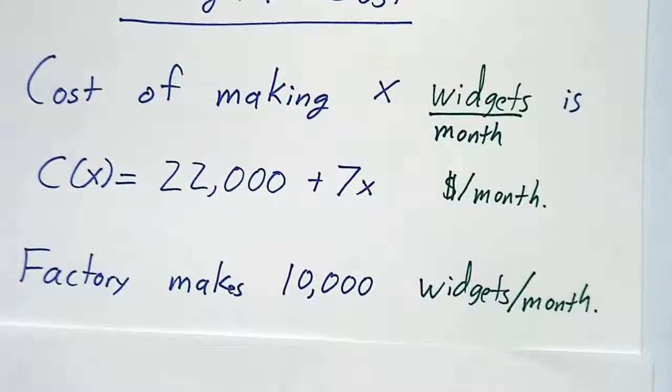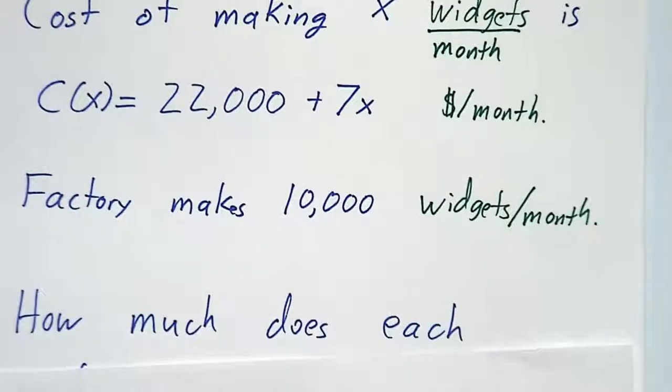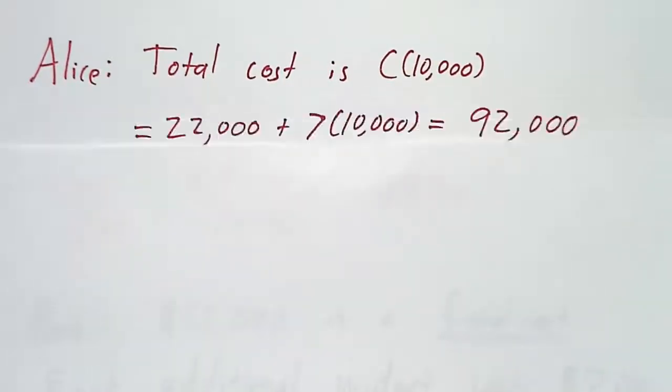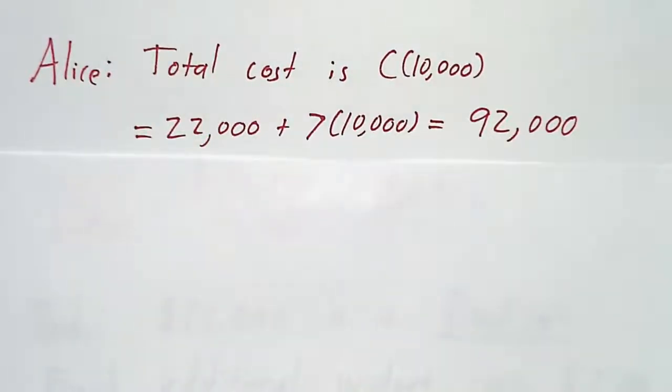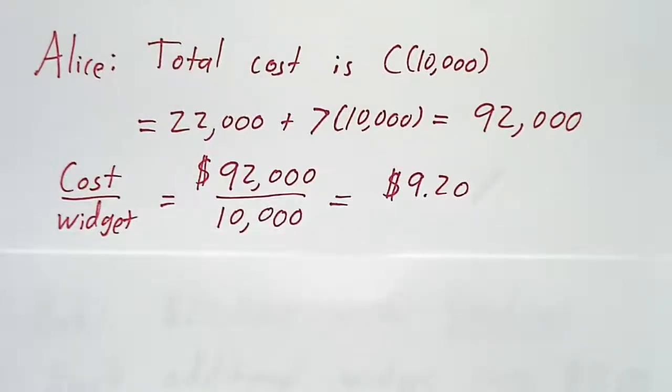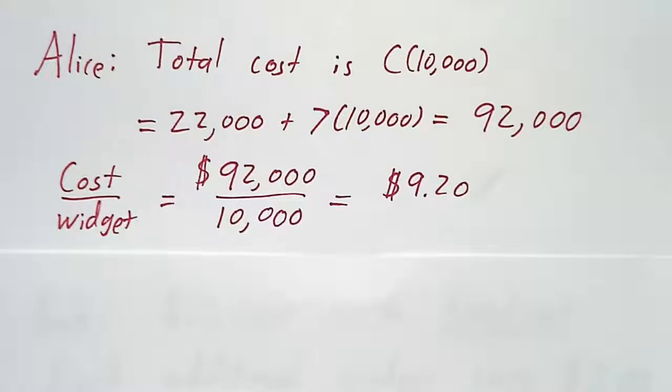So let's suppose that the factory makes 10,000 widgets per month. And we want to understand how much does each widget really cost us? Now, there are two people working at the factory that give two very different answers. Alice says, our total cost is C of 10,000. So we plug 10,000 into our formula, 22,000 plus 7 times 10,000 is 92,000. It's costing us $92,000 to make 10,000 widgets, so the cost per widget must be $9.20. Seems reasonable.